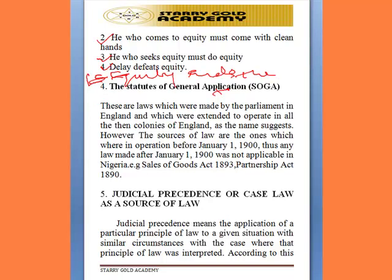Additionally, equity aids the vigilance and not the indolent, and equity will not suffer any wrong to be without a remedy. All these constitute the body of rules that must be observed before one can come under equity. Apart from the principle of common law and the doctrine of equity, the third arm of the received English Law is the statute of general application, known as SOGA. These are laws that were in existence before the 1st of January 1900 — for example, the Partnership Act of 1890 and the Sale of Goods Act of 1893 — and all these are sources of law in Nigeria.